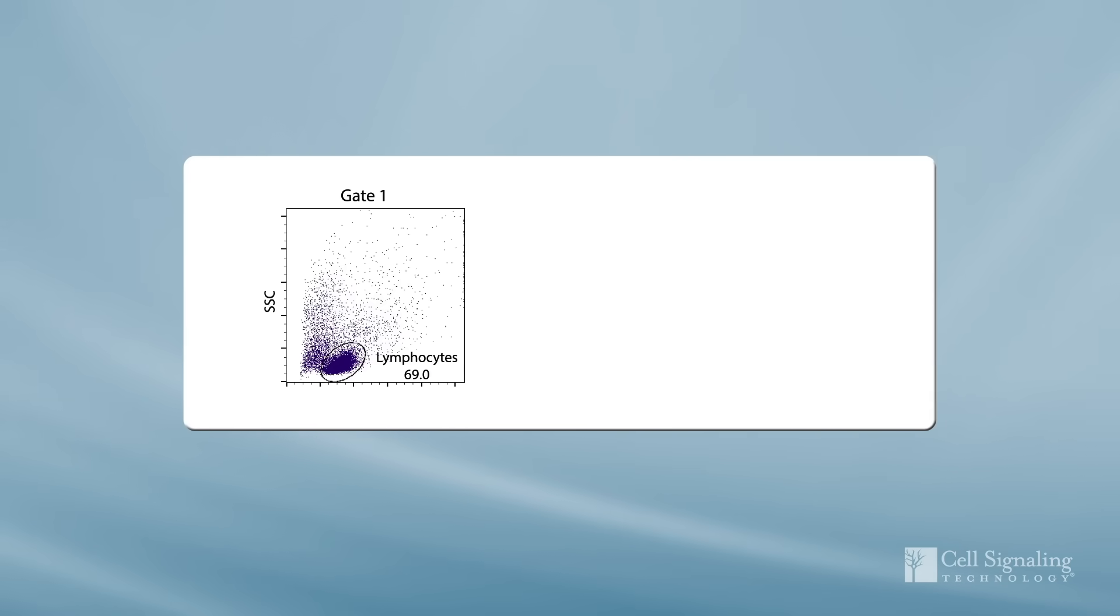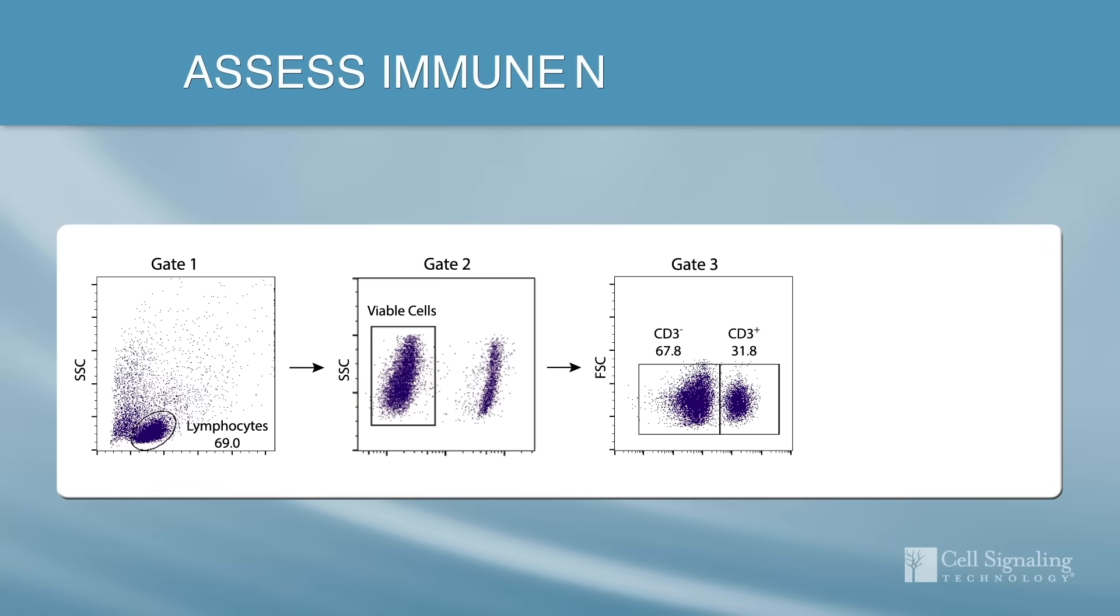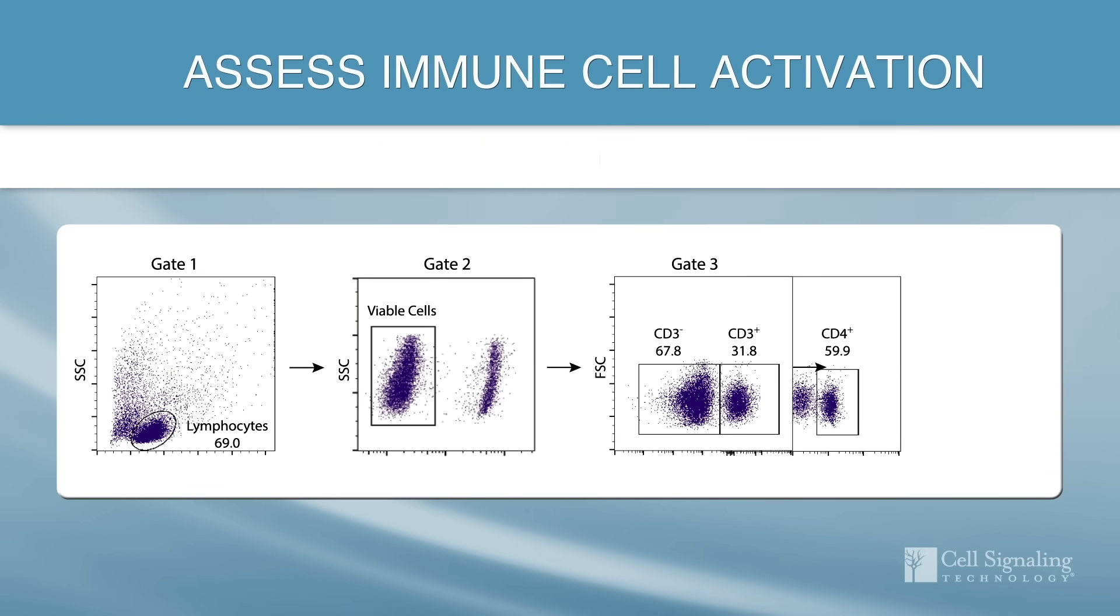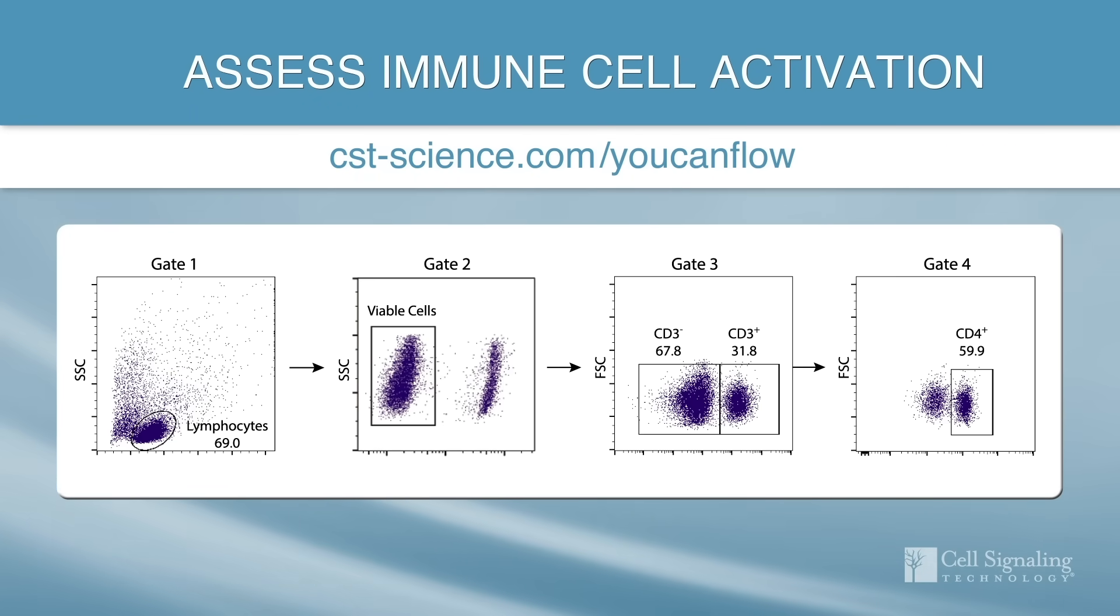We will walk through an example experiment to illustrate how you can build an antibody panel from multiplex flow cytometry to assess immune cell activation. You can also download the companion application note at cst-science.com slash youcanflow.